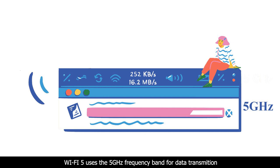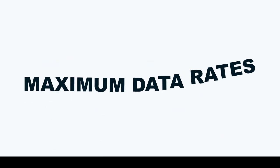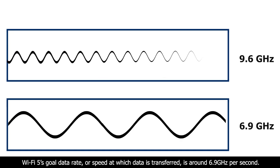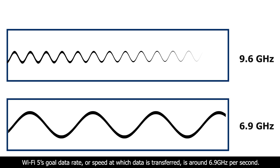Third, frequency bands: Wi-Fi 5 uses the 5 GHz frequency band for data transmission, while Wi-Fi 6 can use both the 2.4 GHz and 5 GHz bands, which means better throughput than Wi-Fi 5.